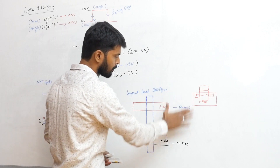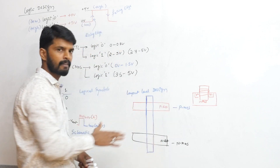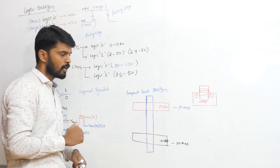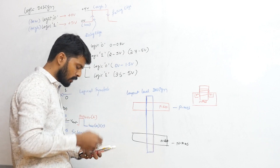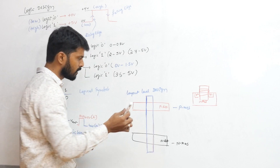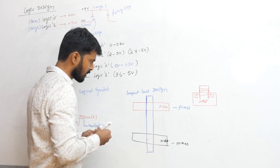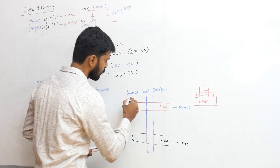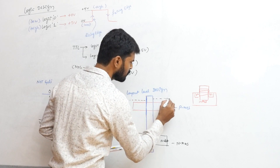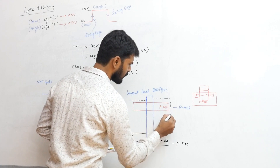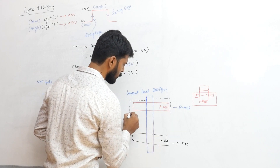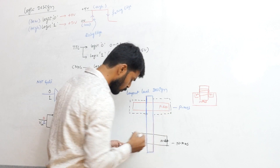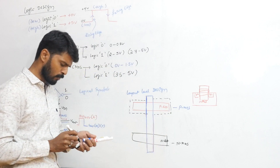The bulk is treated as the P-substrate. In order to distinguish it, we need to place an NMOS here. This layout is quite difficult to understand at first, but it's important to show how exactly the physical structure looks inside an integrated circuit.